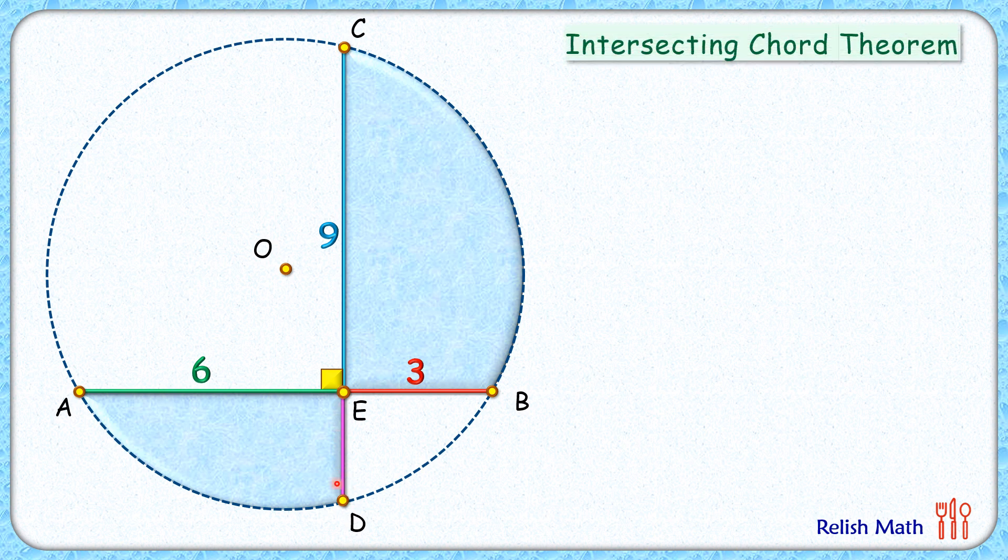We have AE times EB equals CE times ED. Putting the values here and solving it, we get ED length as 2 centimeters. So this length ED is 2 centimeters.